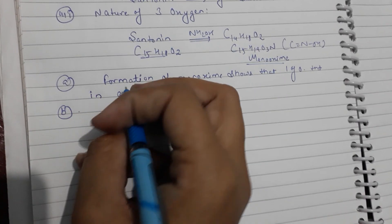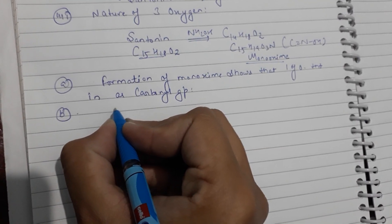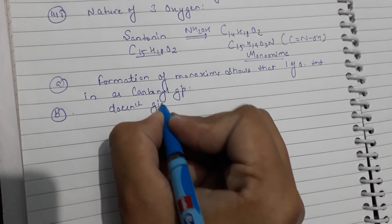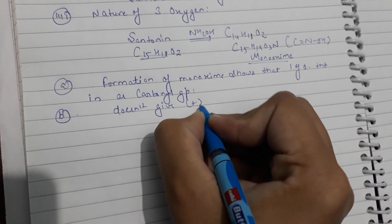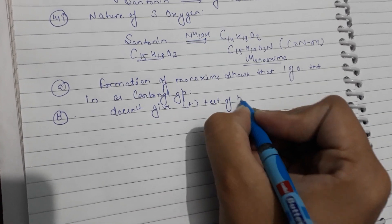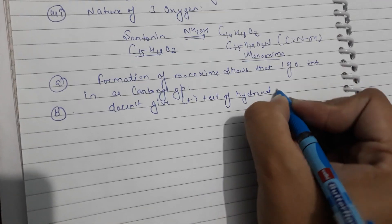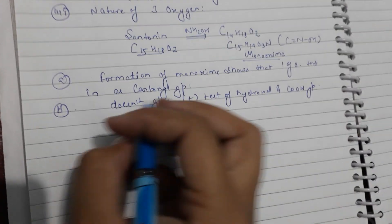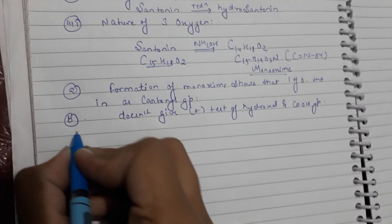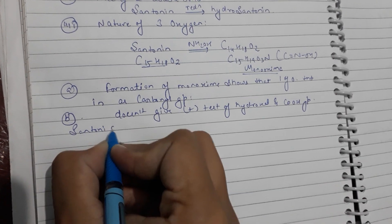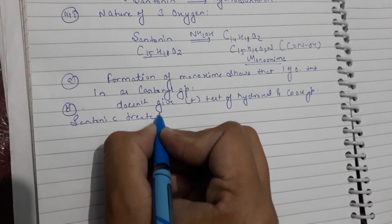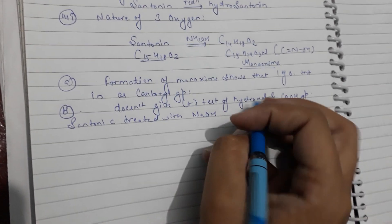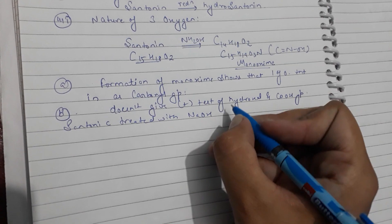The second point is that Centonin does not give a positive test for hydroxyl (OH) or carboxylic (COOH) groups. When treated with NaOH, it forms the sodium salt of a hydroxy acid.